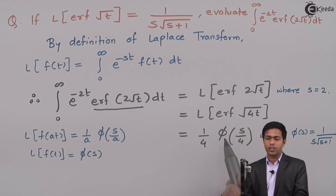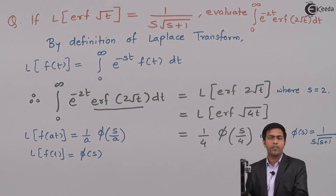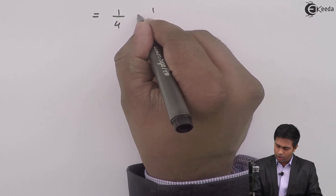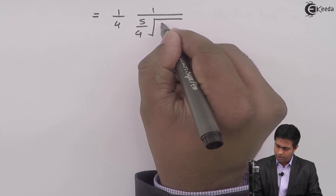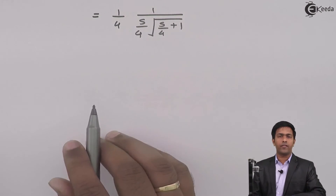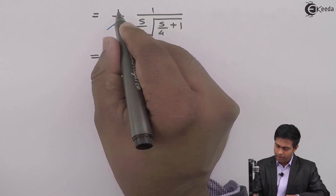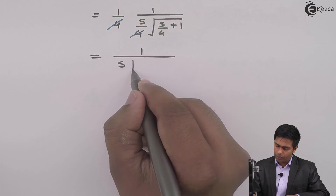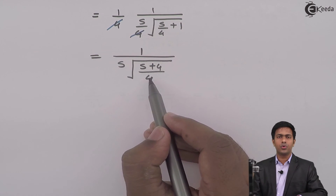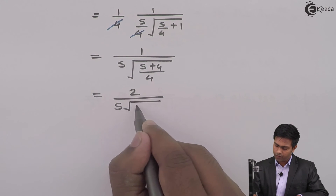So function of s is 1 upon s root of s plus 1. To get the value of function of s by 4, I will substitute s equal to s by 4 in this function of s. This becomes 1 by 4 times 1 upon (s by 4) times square root of (s by 4 plus 1). The 4 and 4 cancel, giving 1 upon s, and in the square root by cross multiplication we get (s plus 4) by 4. The square root of 4 is 2, so that 2 goes to the numerator giving 2 upon s times root of s plus 4.